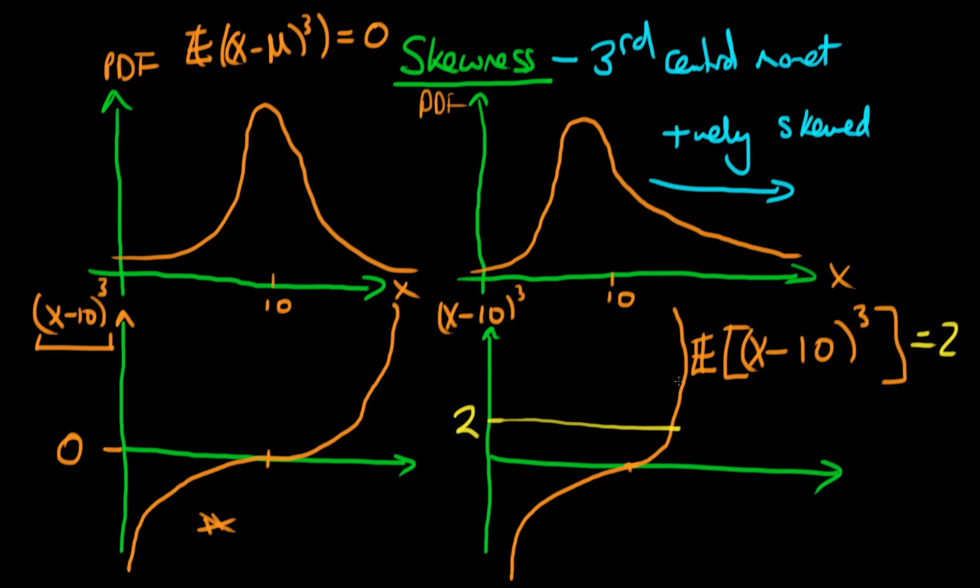So that's what skewness measures. For a negatively skewed variable, we would get a negative number. There's no constraint that this third central moment has to be positive.